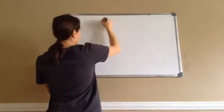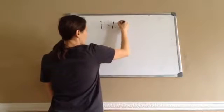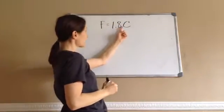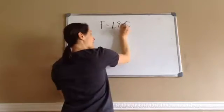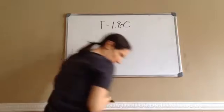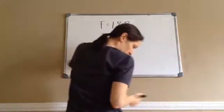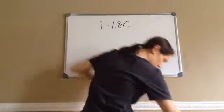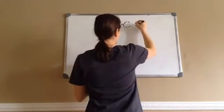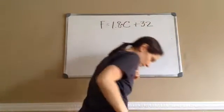Use the formula F equals 1.8C. Now, because it's 1.8C, that means 1.8 times C. Because a letter next to a number means multiplication. Now, use 0.8. Oh, yeah. Okay. 1.8C plus 32. I didn't see that. Okay.